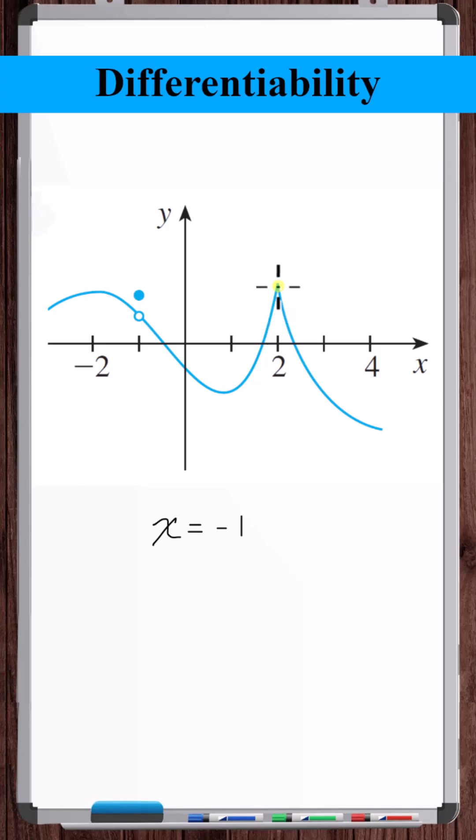The slope approaching from this direction is different from the slope approaching from this direction. You can't specify a specific slope at this point. So the curve is not differentiable at x is equal to two. Now continuing on, everything else looks fine. So the function is not differentiable at these two points.